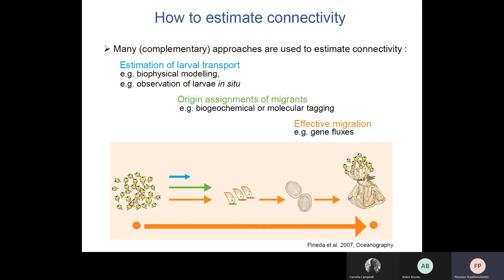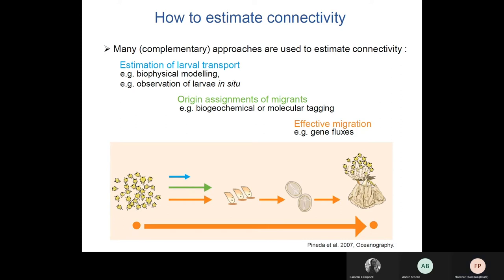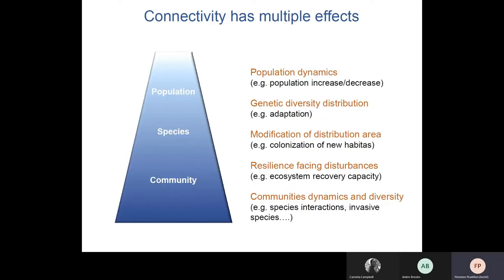These methods require extensive knowledge on the potential signatures of a diversity of populations. Genetic approaches are most often used since they do not require capturing the larvae themselves, but we have to keep in mind that they integrate processes over several generations, incorporate evolutionary processes, and may not reflect connectivity at an ecologically meaningful temporal scale if used alone.